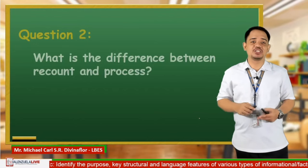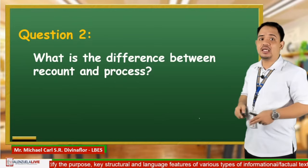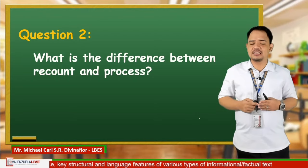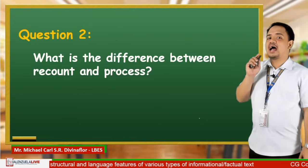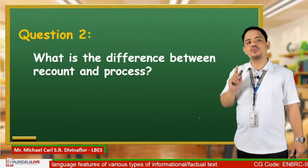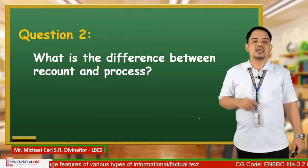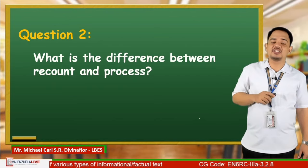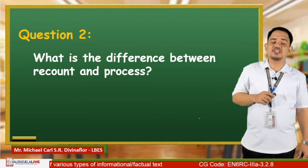Question number two: What is the difference between recount and process? Thank you for your question. Recount is when we talk about the things that happened to us — the things that we do or our experiences. For example, how to go to school from your house — you recount the things that you do to get to your destination. On the other hand, a process is when we want to achieve a result and we need to follow steps. Examples are in cooking or doing chores — we follow certain steps to do them correctly. But both of them emphasize the importance of sequence.